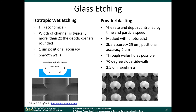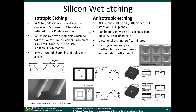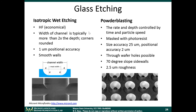Moving on to glass etching. Another very common material for MEMS and bio-MEMS devices is glass. Why would we want to use glass? First of all, glass is optically transparent. Whenever we're doing chemical assays or any type of biological study, we often want to observe the system under a microscope. Having a transparent material is much better than an opaque material like silicon.